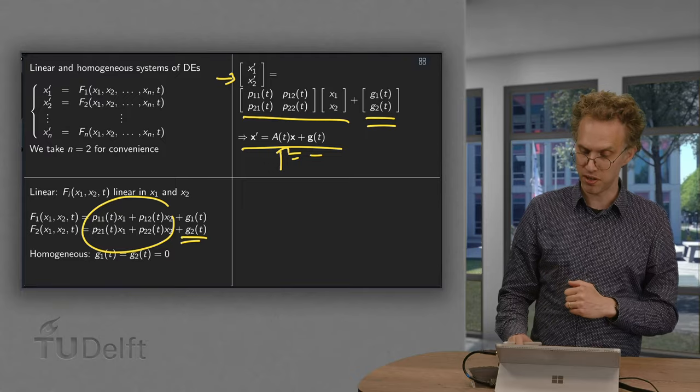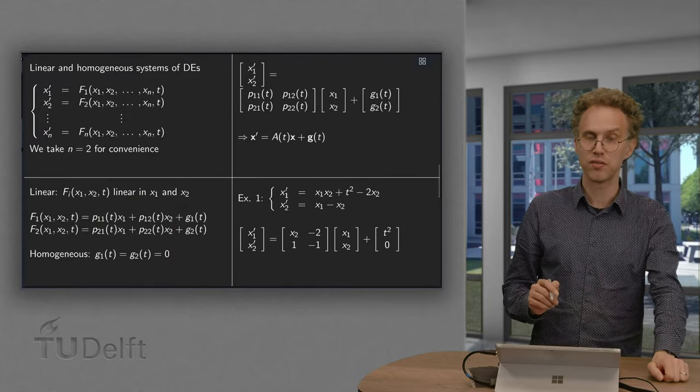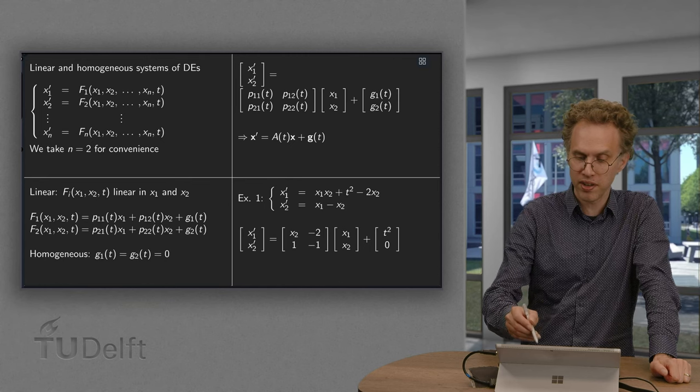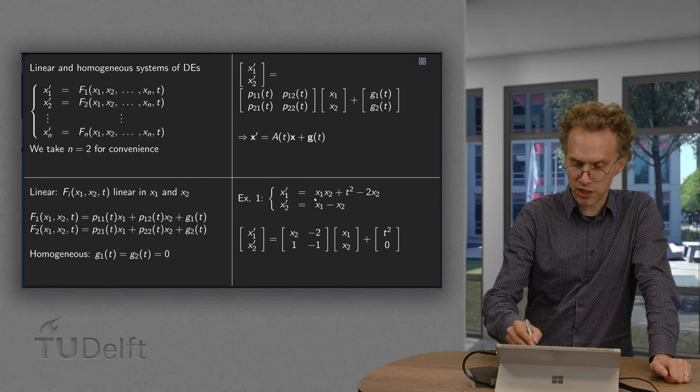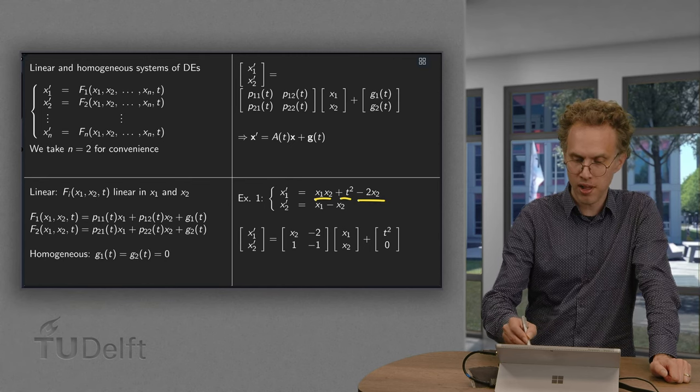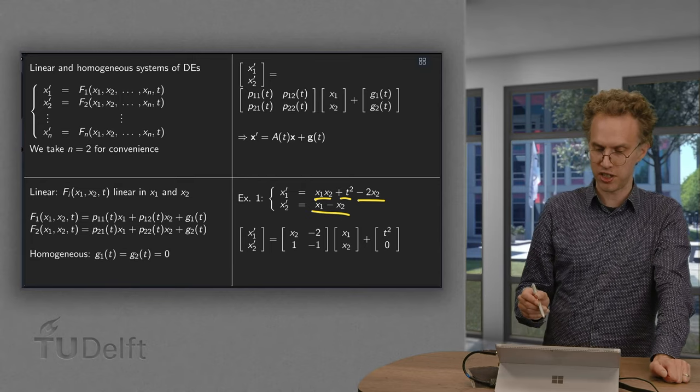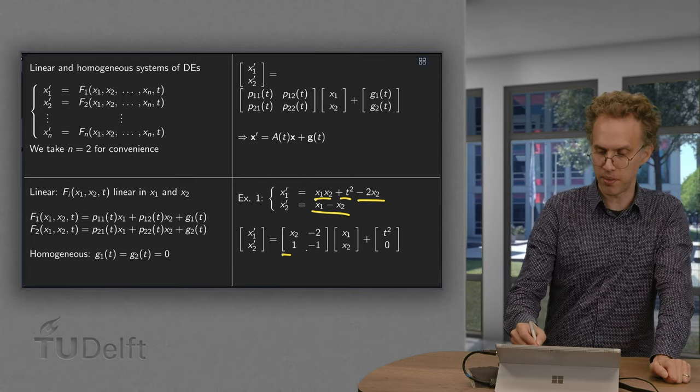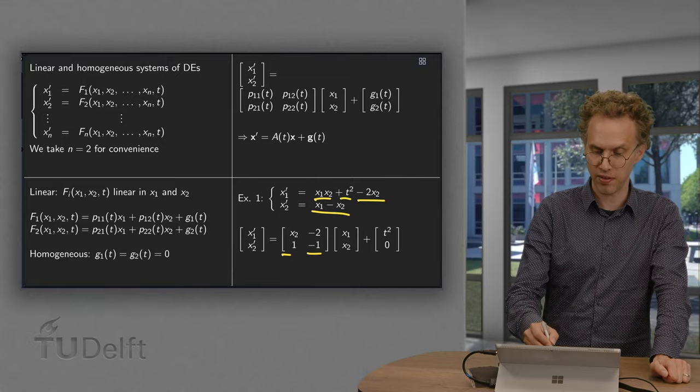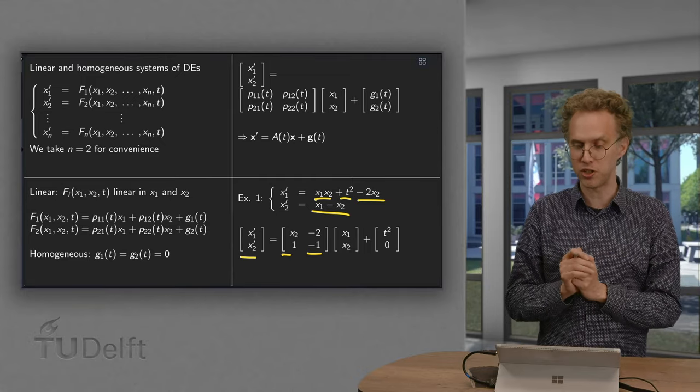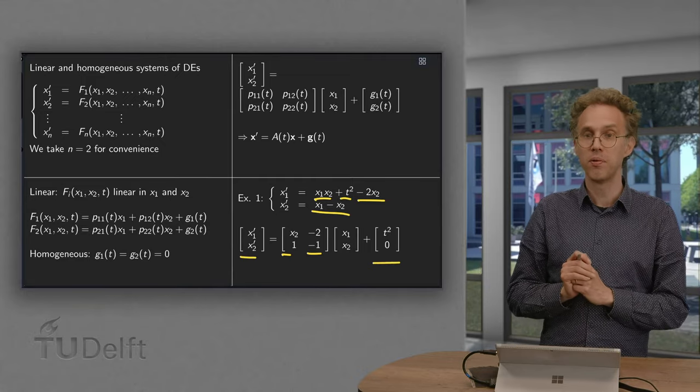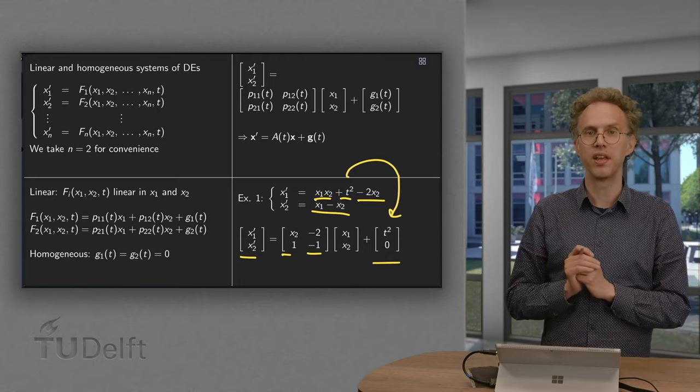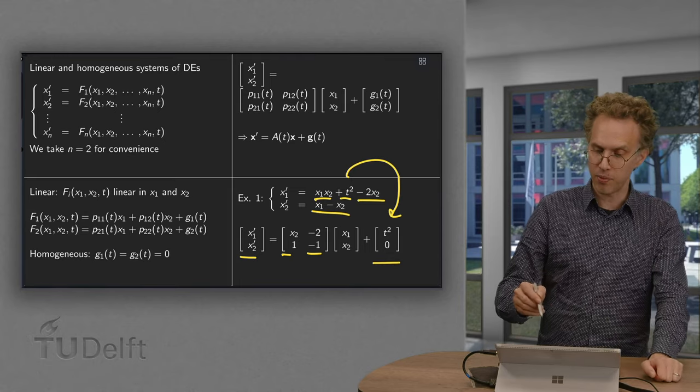Let us try to do this with a couple of examples. First of all, we have this example one which looks linear. So what do we have? x1 prime equals x1 times x2 plus t squared minus 2x2 and x2 prime equals this. So the second equation is easy. We put a 1 and a minus 1 in the matrix and then we have x2 prime equals x1 minus x2 plus 0. What to do with the first term? Well, we can put t squared over here in the vector. And then what can we do? We have a minus 2x2 and we have an x1, x2.